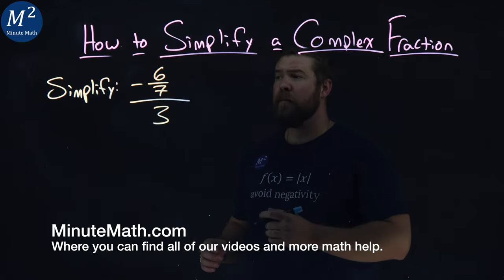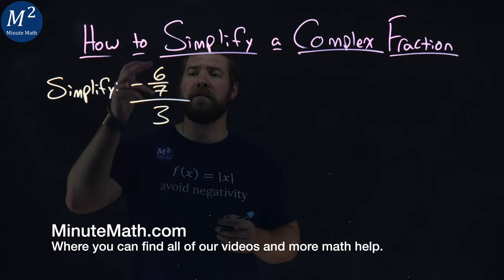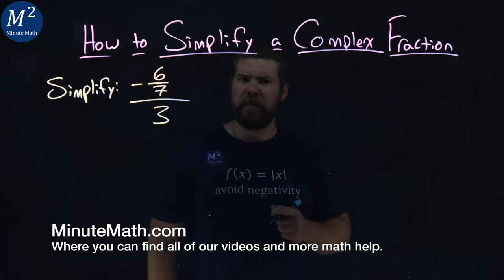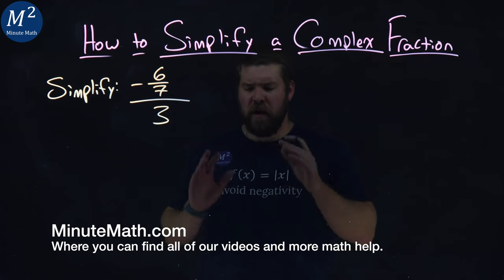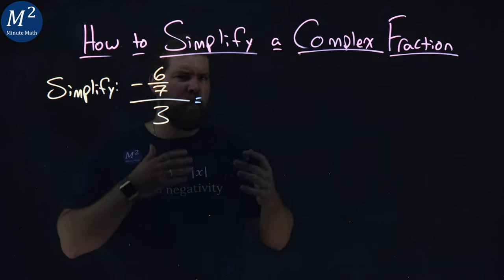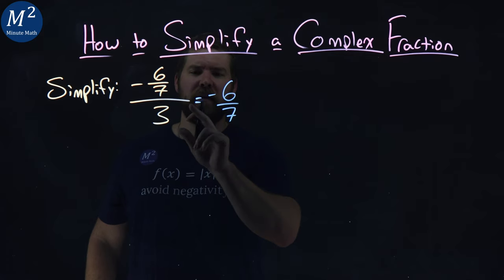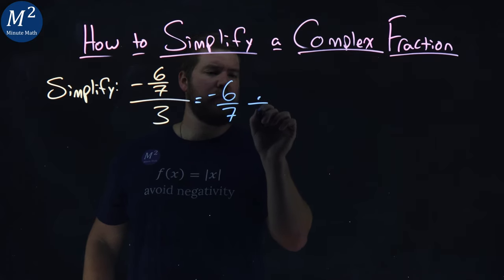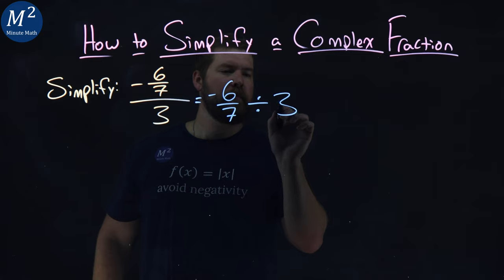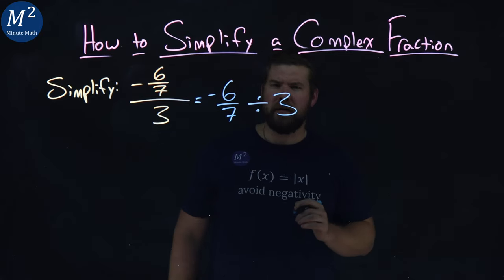We're given this problem here. Simplify negative six-sevenths divided by three. It's like a big fraction. Let's rewrite this as something more manageable to understand. Negative six-sevenths divided by three. That makes it a little easier to see.